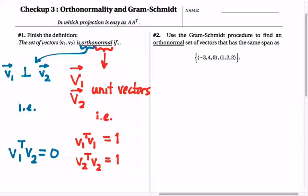For example, if we look in question 2 at this pair of vectors, let's call them V1 and V2 just for the sake of convenience. So V1 is negative 3, 4, 0. V2 is 1, 2, 2.